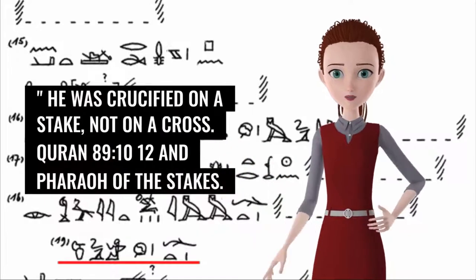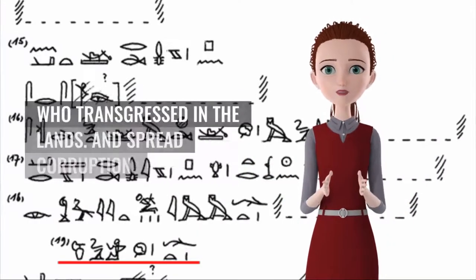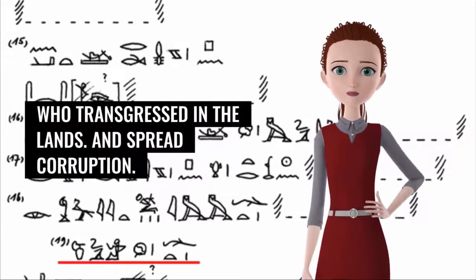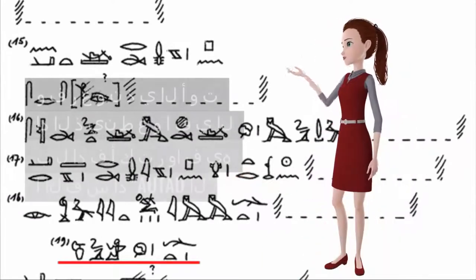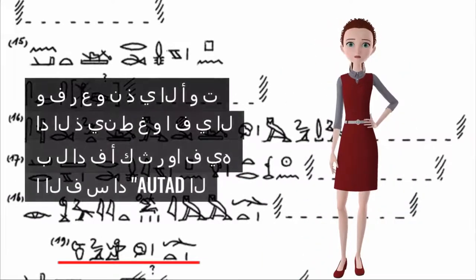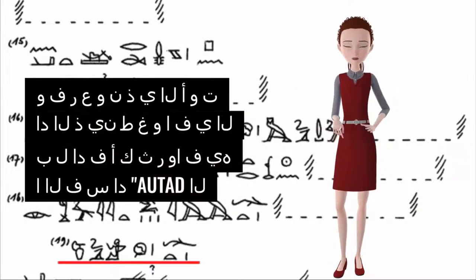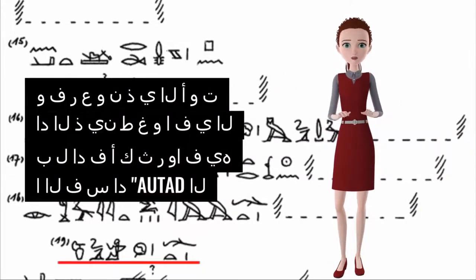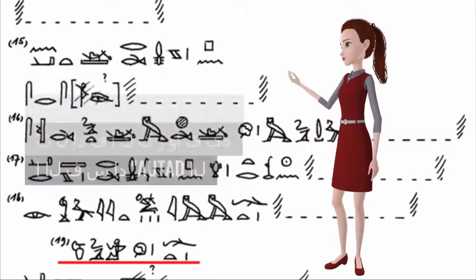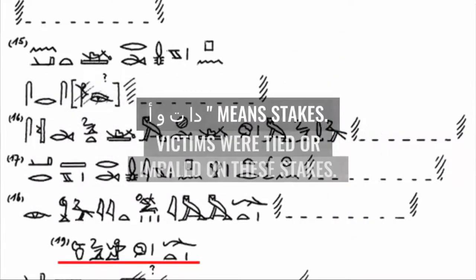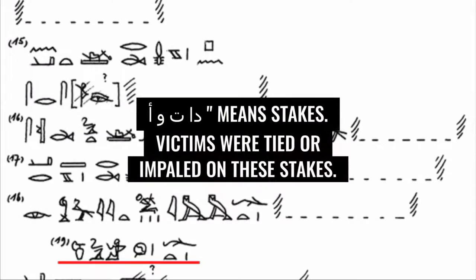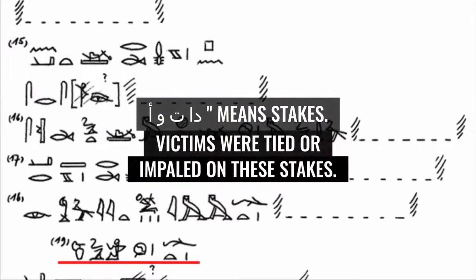Quran 89:10-12: And Pharaoh of the Stakes, who transgressed in the lands and spread corruption. Victims were tied or impaled on these stakes.